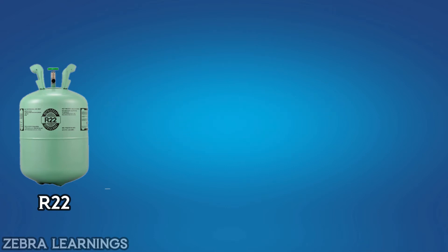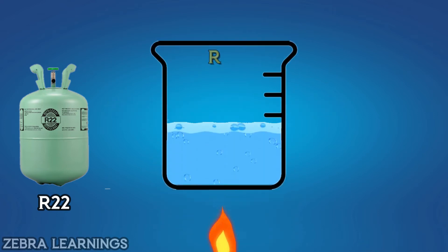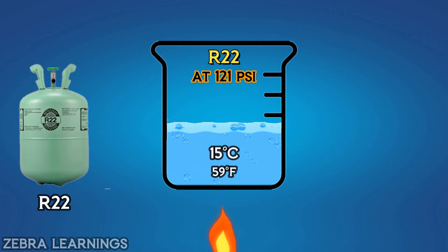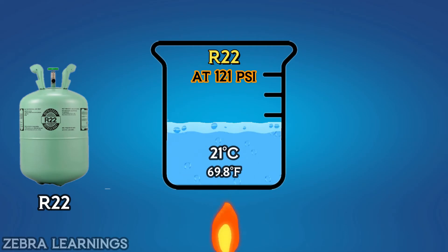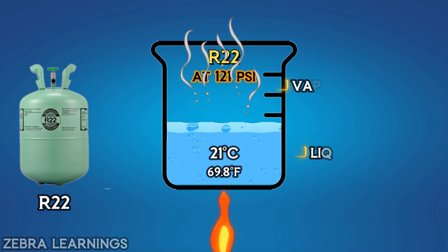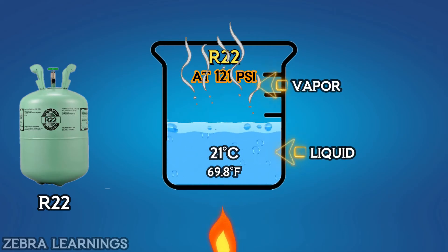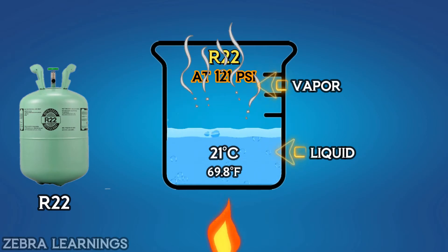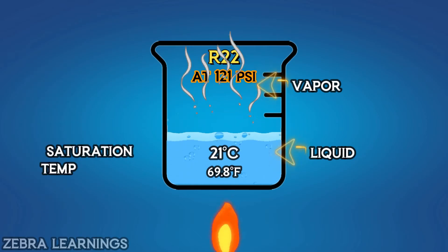That is, if R22 refrigerant is heated to 21 degrees Celsius at a pressure of 121 PSI, the refrigerant will begin to boil and change from liquid to vapor.